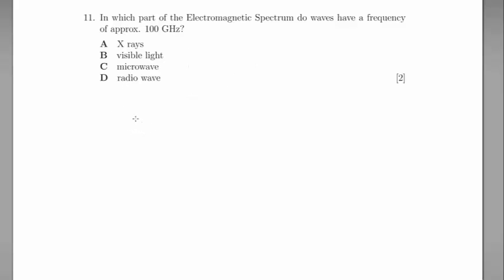Well, first, let's convert 100 gigahertz into standard form. So 100 times 10 to the 9 is equal to 1 times 10 to the 11 hertz.